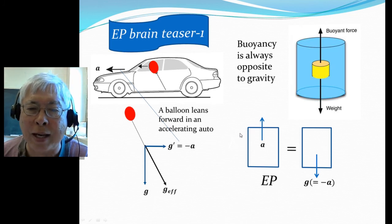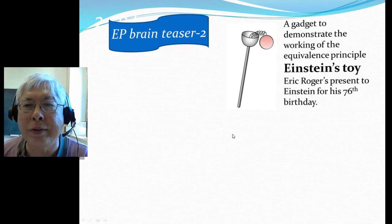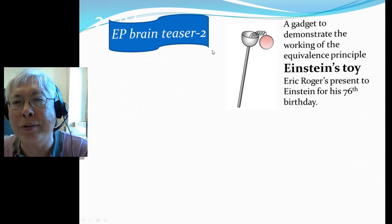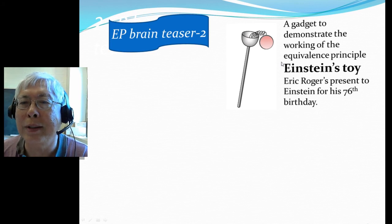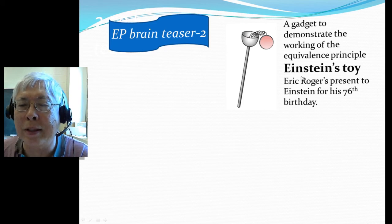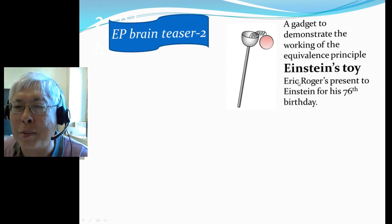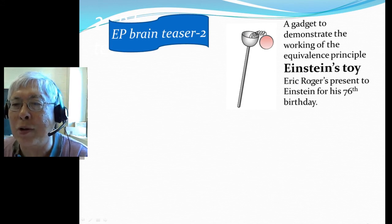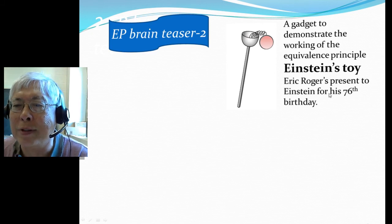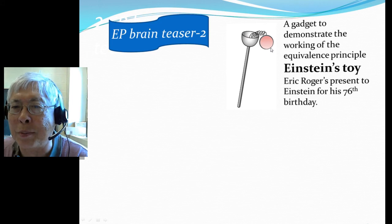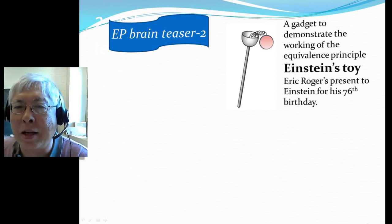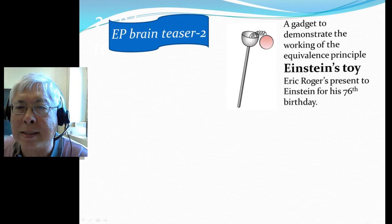The second application is something I call Einstein's toy. It's a gadget that I can also use to demonstrate the equivalence principle. Actually Einstein's neighbor in Princeton, Eric Roger, who was a famous instructor at Princeton University who did all kinds of demonstrations, presented Einstein for his 76th birthday a birthday gift, which is basically something like a plunger with a ball that holds the ball of the exact size that fits in and they connect it with a spring.